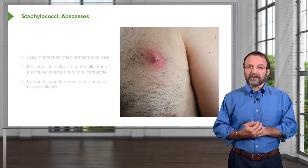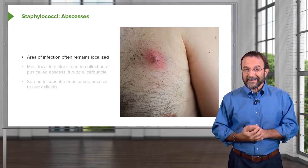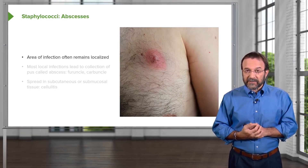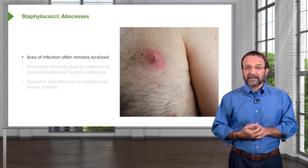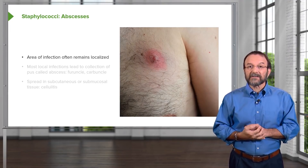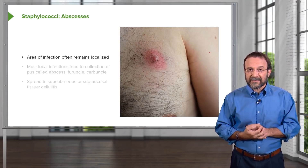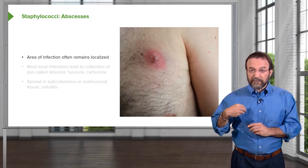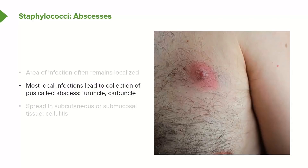Here's a photograph of a man with an abscess caused by a staphylococcal infection — a boil on his chest. This is an example of a boil caused by staphylococcal infection. The infection remains localized within the boil and doesn't spread beyond it. This boil contains pus — called an abscess or a furuncle. A furuncle is one boil; a carbuncle is when you have several boils together, making a larger structure.